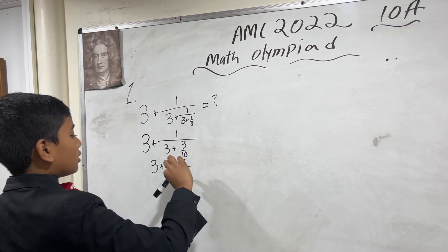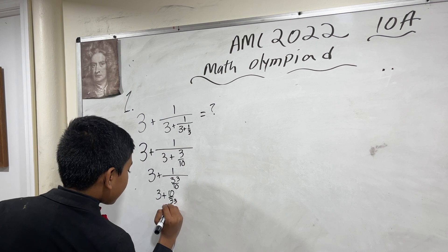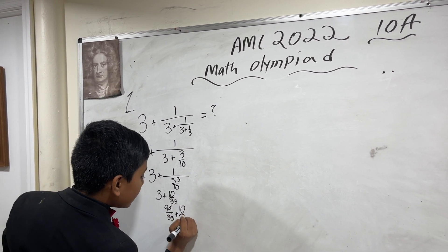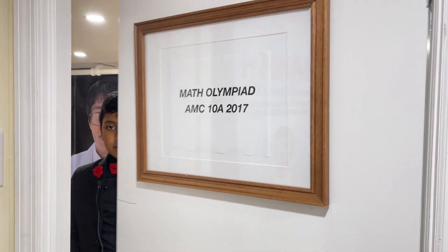And using the reciprocal rule from last time, we get 3 plus 10 over 33. That gives us 99 over 33 plus 10 over 33 equals 109 over 33.